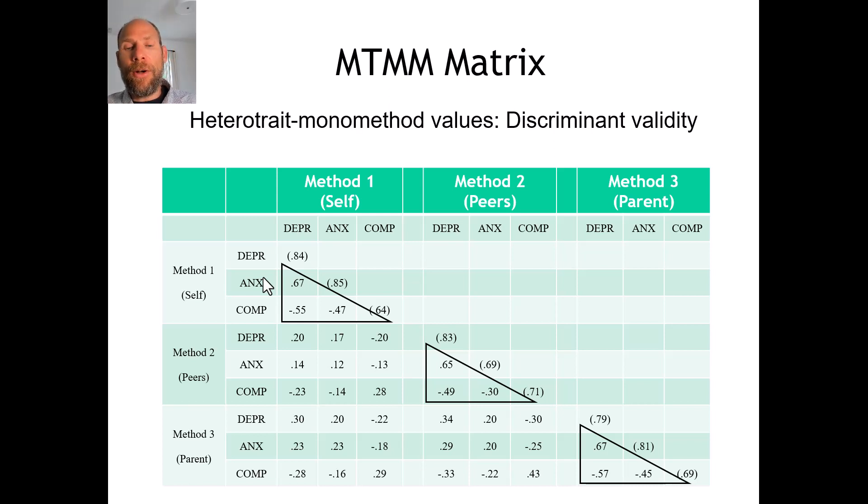The last type of correlation in this matrix is found in the triangles around those convergent validity sub-diagonals. These are called hetero-trait hetero-method values — different traits measured by different methods. These also relate to discriminant validity and serve as a baseline condition, since these variables share neither the same trait nor the same method, so they shouldn't be very high. Crucially, they should not be as high as the mono-trait hetero-method convergent validity values. Here in this matrix that looks problematic, as those hetero-trait hetero-method values are just about the same magnitude as the convergent validity values.